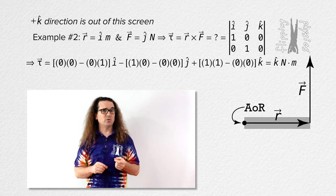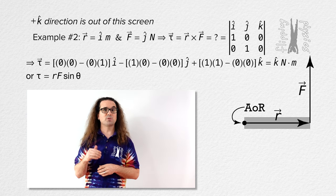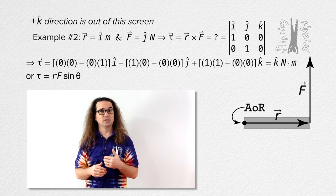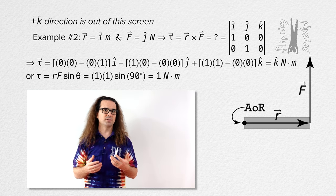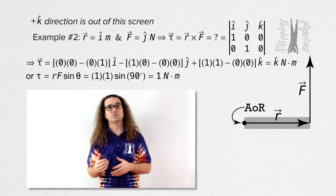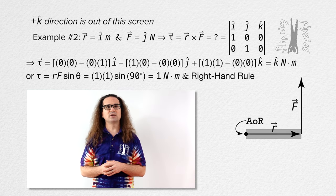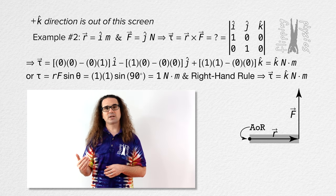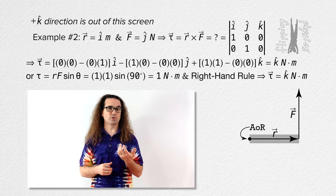Now, we could also have used the magnitude torque equation: magnitude of the position vector times the magnitude of the force vector times the sine of the angle between the two. That equals 1 times 1 times the sine of 90 degrees, which equals 1 newton meter. Then, using the right-hand rule as we just did, we get the direction out of the screen, or the positive k direction. Both the cross product torque equation and the magnitude torque equation combined with the right-hand rule give us the same value for torque.